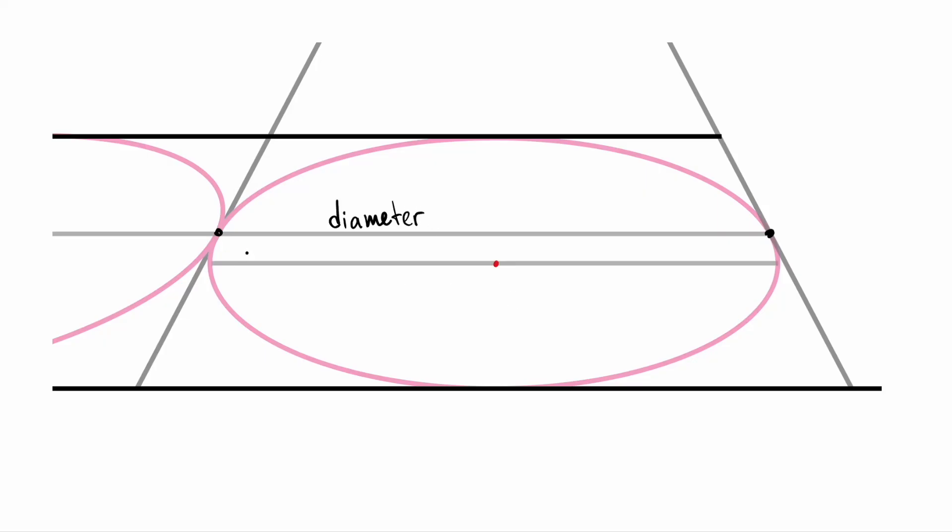But that diameter doesn't turn into the major axis. The major axis is actually a bit lower and due to perspective distortion, it ends up wider than the original diameter.